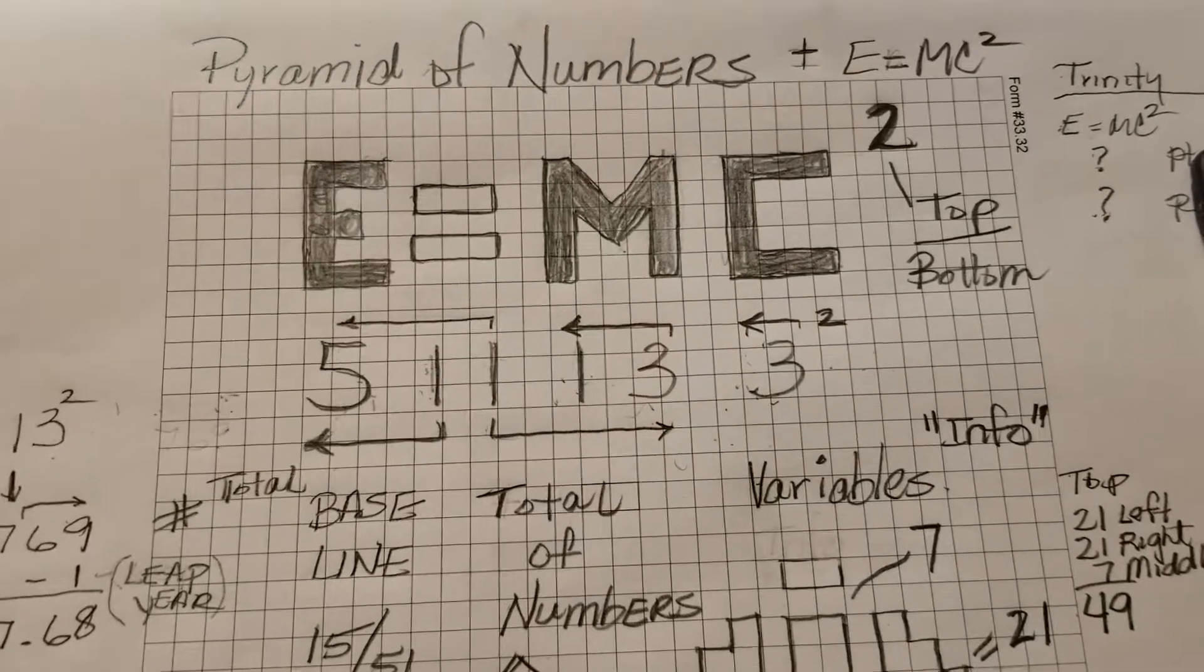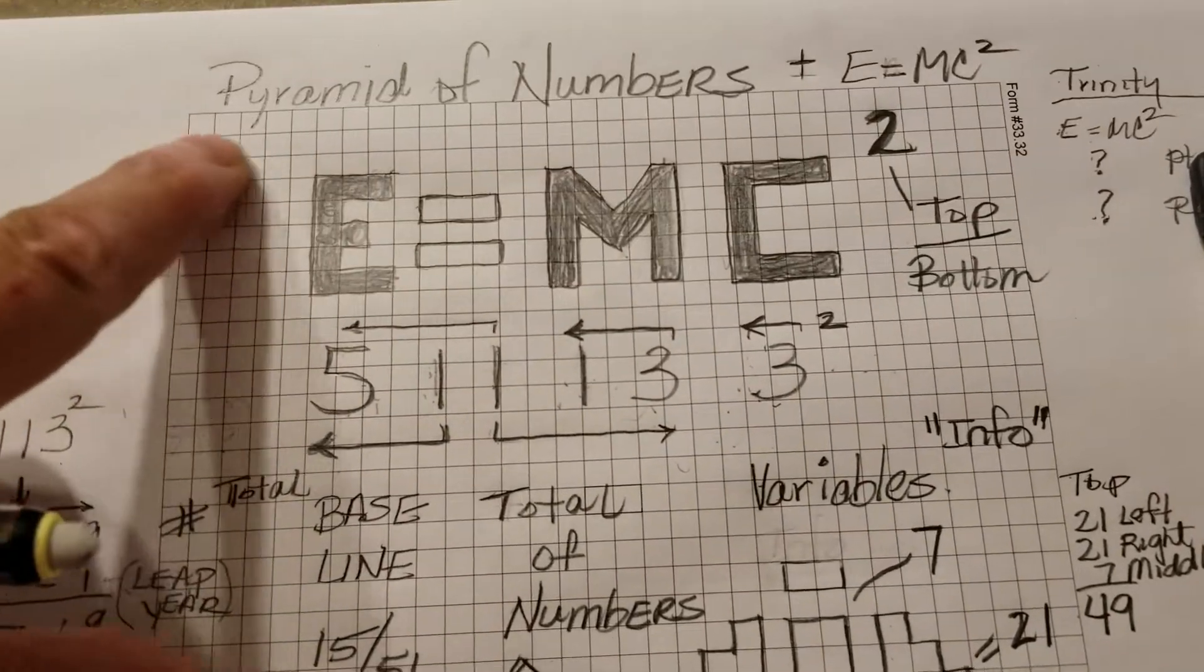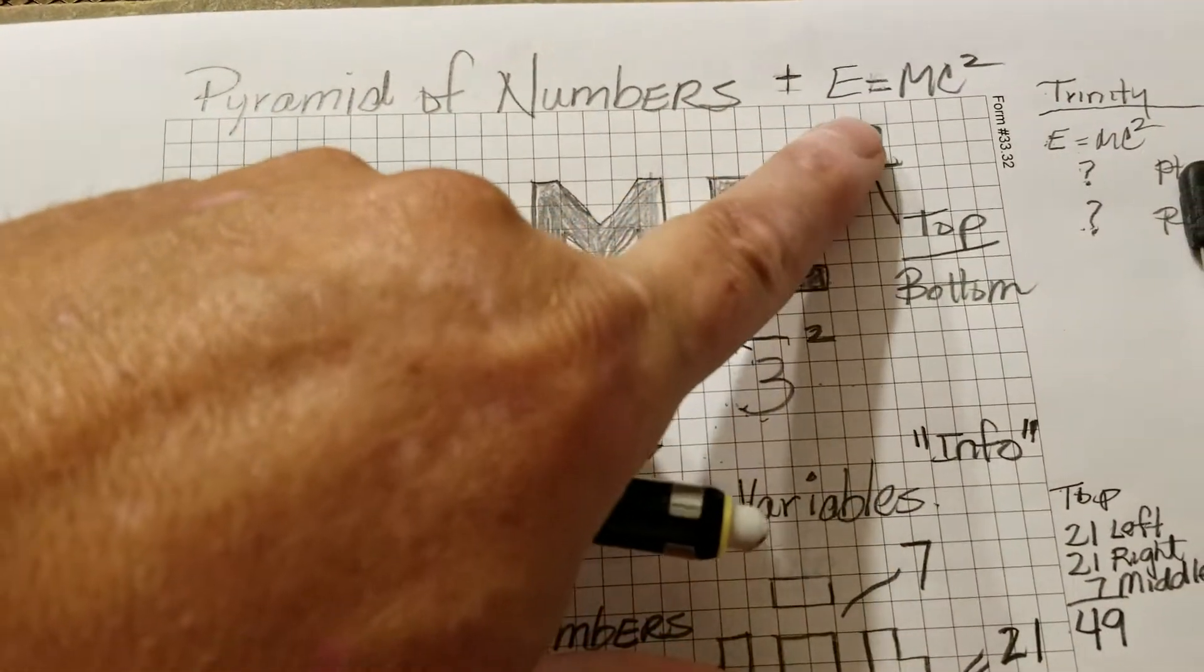Hello, this is Ever Pierce, and this is a continuation of Pyramid of Numbers, E equals MC squared.